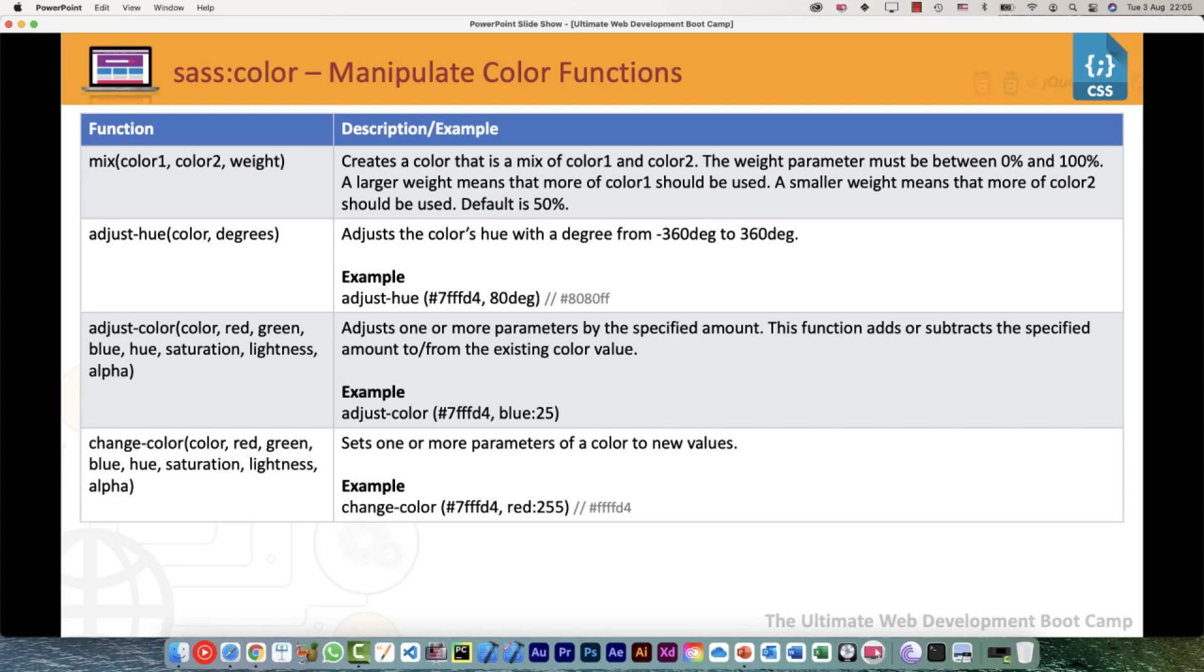If we want to adjust the hue by certain degrees, we can use the adjust-hue function. If we need to adjust the color, one or more parameters by the specified amount, then we can use the adjust-color function. Change-color sets one or more parameters of color to the new values. More or less, adjust and change are doing pretty much almost the same thing.